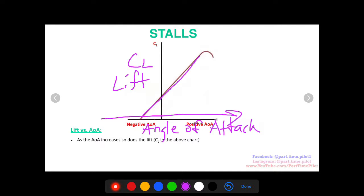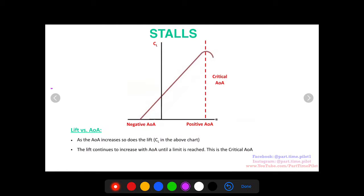As angle of attack increases, lift increases. However, lift only increases until a certain point before it rapidly turns around and starts to decrease. This point is a certain angle of attack called the critical angle of attack. Once the critical angle of attack is reached, lift is reduced rapidly. This is what's happening during a stall—you're going past that critical angle of attack and your lift is being diminished in a snap, and that's why your aircraft's nose is going to drop.